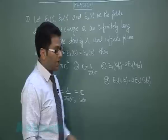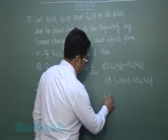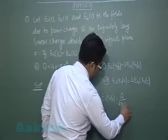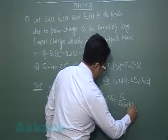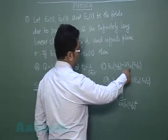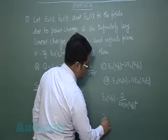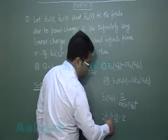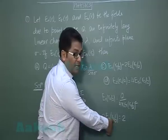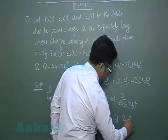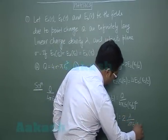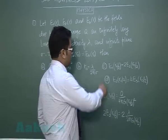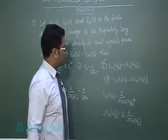Option C relates the electric field due to the point charge at r0/2, which is E1(r0/2) = q/(4π ε₀ (r0/2)²), with 2E2(r0/2), which is twice the electric field due to the line charge at r0/2, that is λ/(2π ε₀ (r0/2)). Using these relations, option C comes out to be correct.